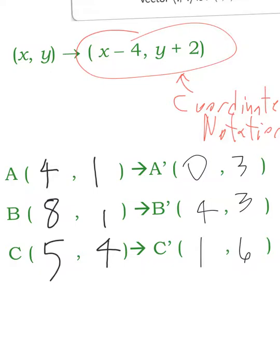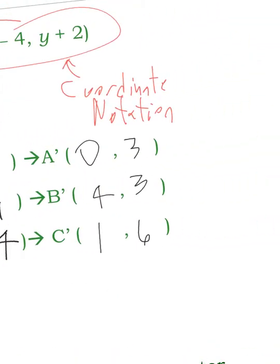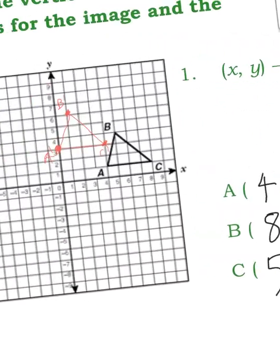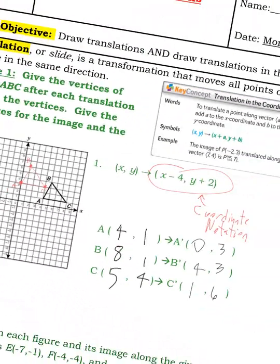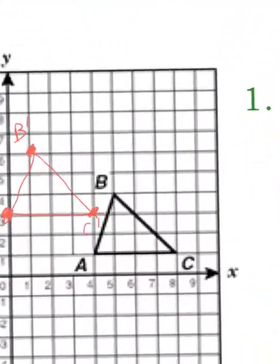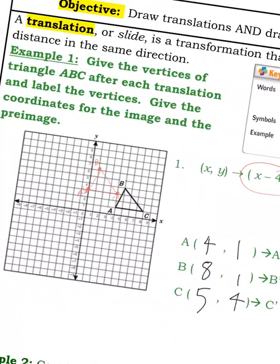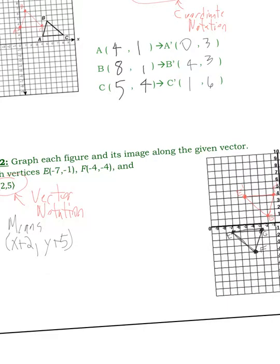And see how they're noted with the apostrophe mark? We say that. That's prime. Those are your image coordinates. Remember, these are the pre-image. Pre-image is what you start with. The image is the new thing. So over here I have it already graphed. Everything went 4 to the left and 2 up. And you can see that it will match 0, 3, 4, 3. Here's 4, 3. And then 1, 6. Here I'm across 1, up 6. And that's it for translating on the first one.